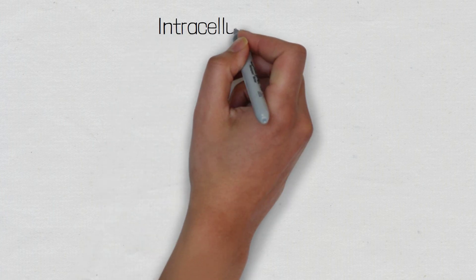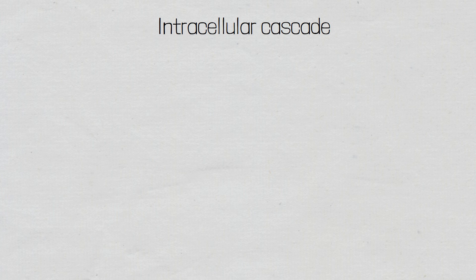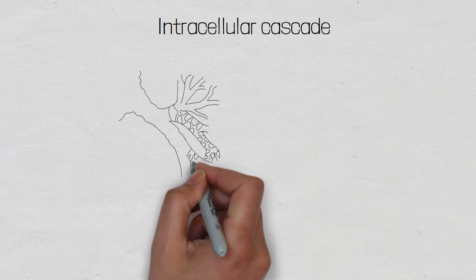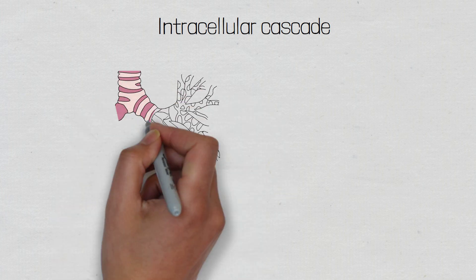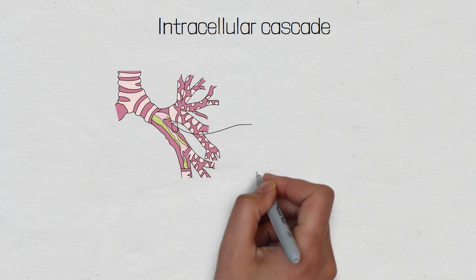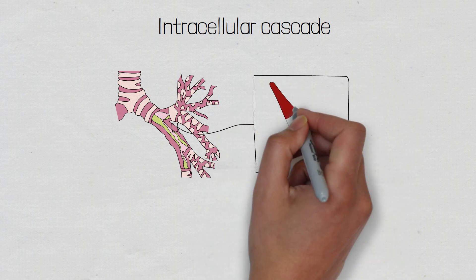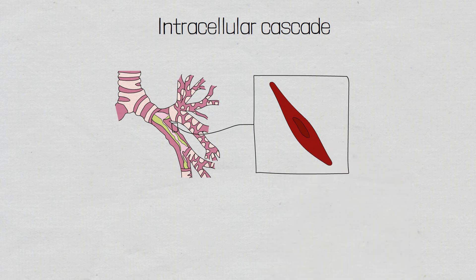Now let's look at the intracellular cascade that takes place when salbutamol binds to its receptor. In understanding the clinical application of salbutamol, this part really isn't important, so feel free to skip ahead. Because salbutamol is primarily used for its bronchodilatory effect, we're going to look at a smooth muscle cell within the bronchi and the intracellular cascade that takes place once salbutamol has bound to a beta-2 receptor.